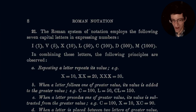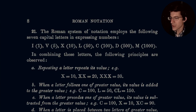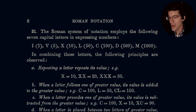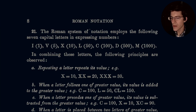Let's get into how we actually understand Roman notation. The Roman system of notation employs the following seven capital letters in expressing values: I is 1, V is 5, X is 10, L is 50, C is 100, D is 500, and M is 1000.